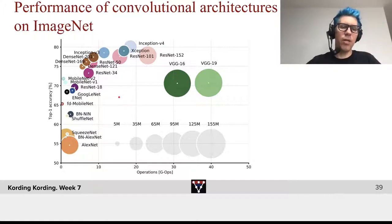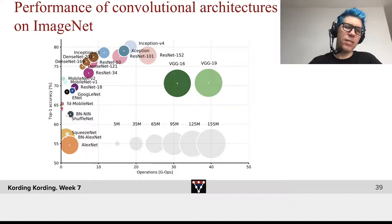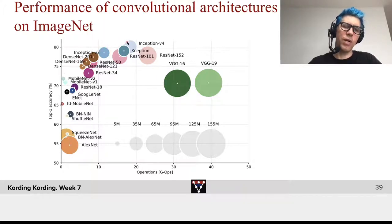Look at that — relative to a lot of models that came afterwards, AlexNet actually has a very large number of parameters. And VGG even has more parameters. They have a lot of parameters and they are eclipsed by later models. For the later models, it almost looks like there's a sudden frontier here, where at least within this range, having more runtime allows you to be better.